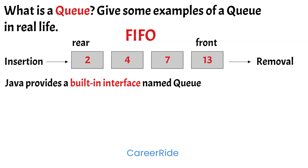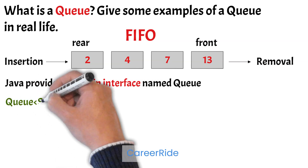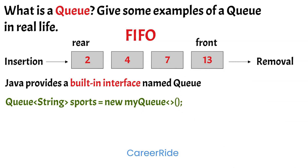A queue data structure can be created using the Queue interface. The commonly used methods of a Queue interface are: add, peek, and remove. The add method inserts a specific element into the queue; it returns true if successful and throws an exception if not. Peek returns the head of the queue and returns null if the queue is empty. Remove returns and removes the head of the queue, and throws an exception if the queue is empty.